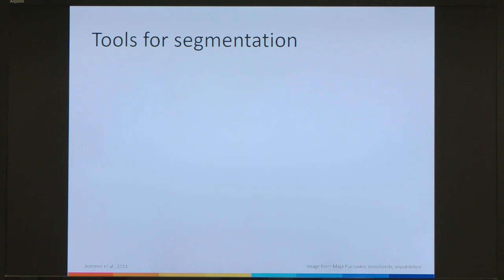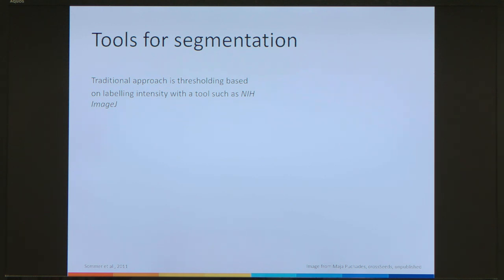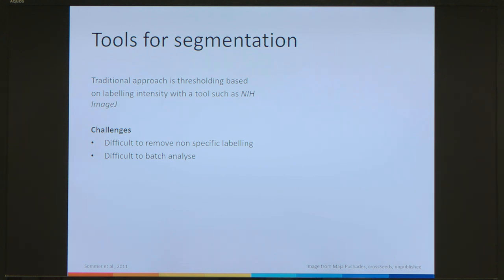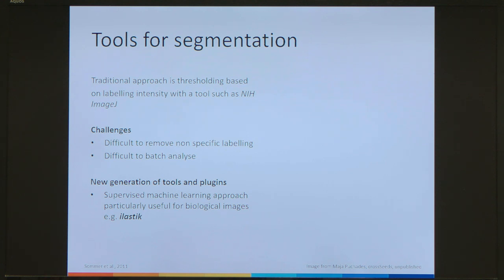Just a bit of background about tools for segmentation. The traditional approach is to threshold based on labelling intensity — for example with a tool such as ImageJ. When you do segmentation, what you're interested in is pulling out the labelling in the image, such as labelled cells or immunohistochemical labelling. The challenge with traditional thresholding of intensity is that it can be very difficult to remove non-specific labelling, and it's also difficult to batch analyse. A new generation of tools and plugins have been developed to solve some of these problems.